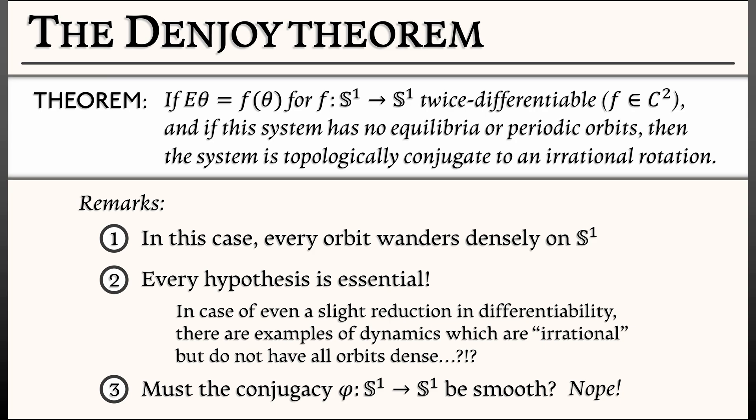And the answer is no, it does not have to be. In fact, there are some nonlinear maps of the circle that are really conjugate to an irrational rigid rotation, but are so weird that that conjugacy cannot be chosen to be smooth under any circumstances.